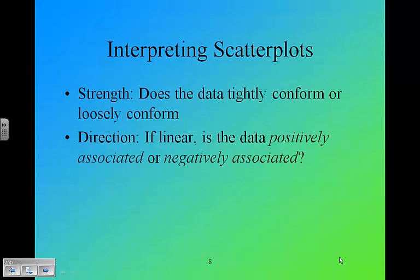You also want to think about the strength and the direction. The strength: does the data tightly conform or loosely conform? Are the dots on the scatter plot tightly bunched or really spread out? And direction: if the scatter plot is linear, if it looks like it forms a straight line of some sort, we need to know is the data positively associated. In other words, as x gets bigger, y gets bigger also. Or negatively associated, so as x gets bigger, y gets smaller.